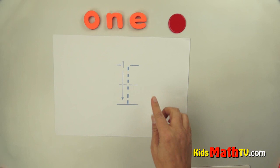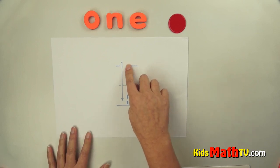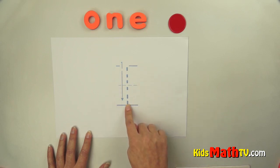To write the number one, we start at the top and we make a straight line down. A one is simply one straight line. Start at the top and go straight down.